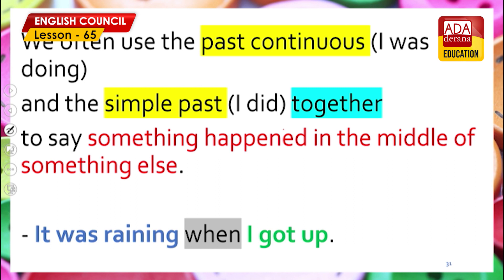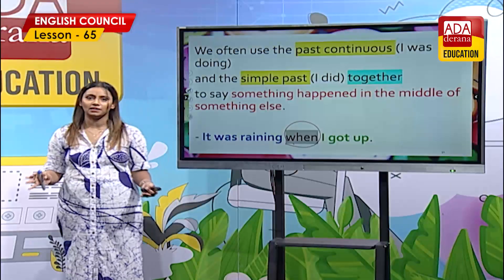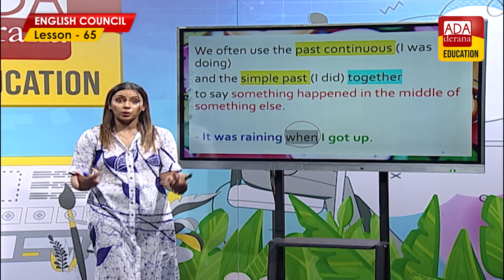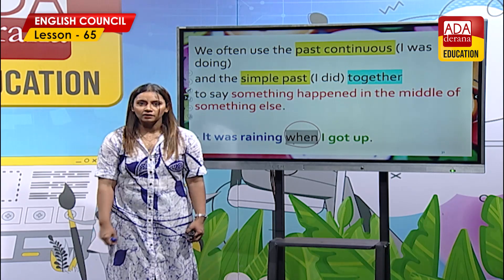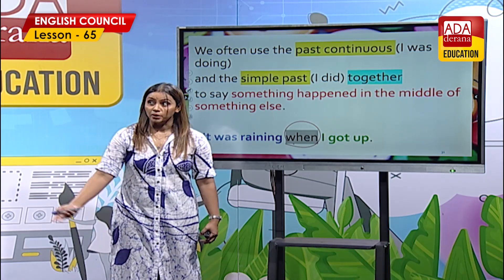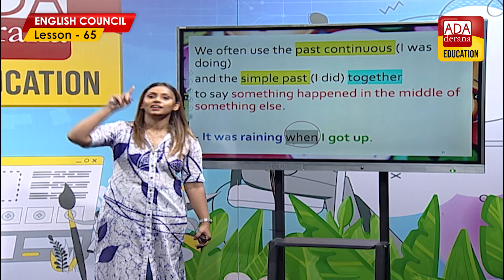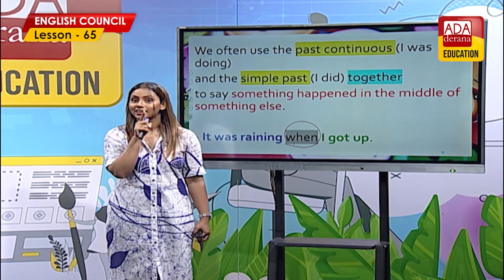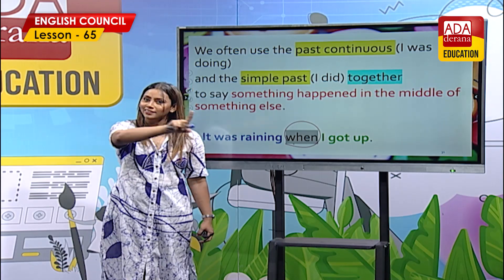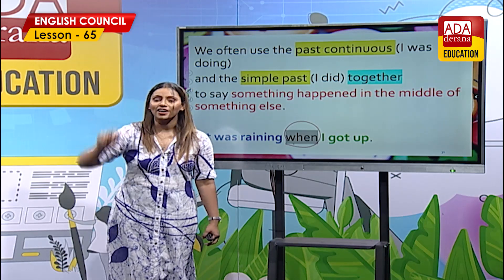'It was raining when I got up.' This is what I told you — the conjunction. We join two sentences with 'when.' In Sinhala, the meaning is: 'mama naagiti na kuttaa, vaha vaha tibunay' — I woke up and it was raining at that point.